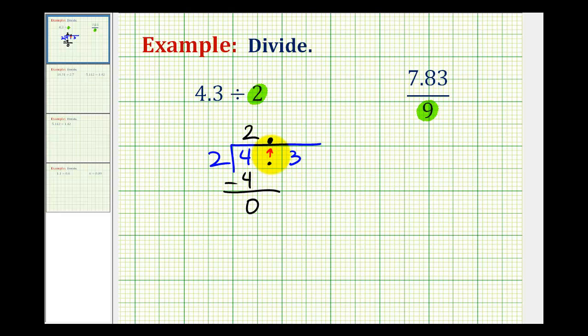And now that we already have our decimal point in our quotient, we can go ahead and ignore it. So we'll just bring down the next digit, which is 3. And now we need to determine how many twos there are in 3, and that would be 1. 1 times 2 is 2. And we subtract, and that would be 1.